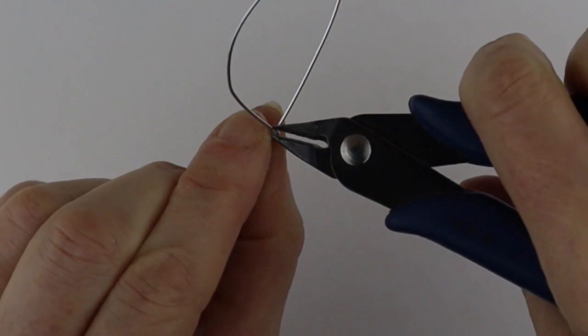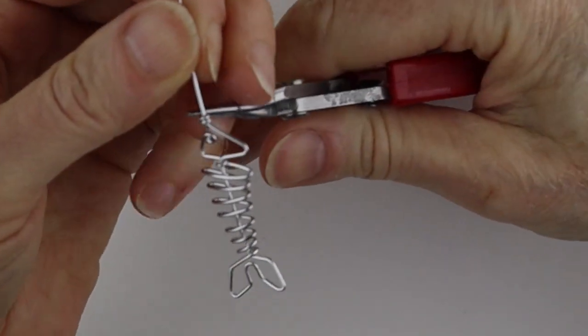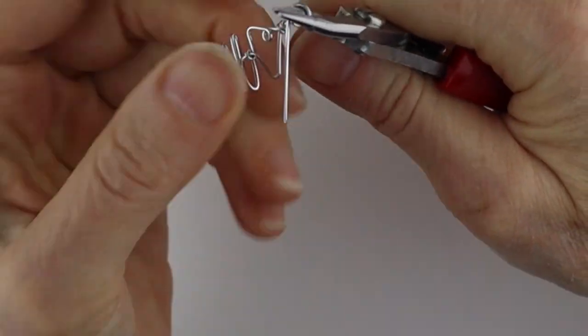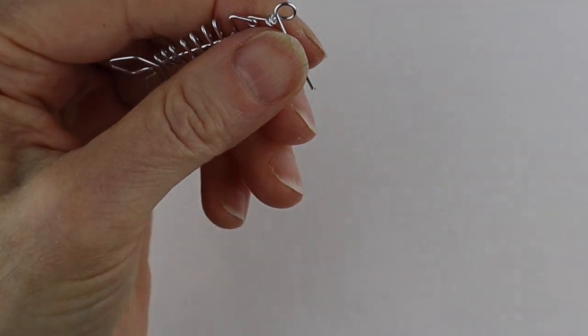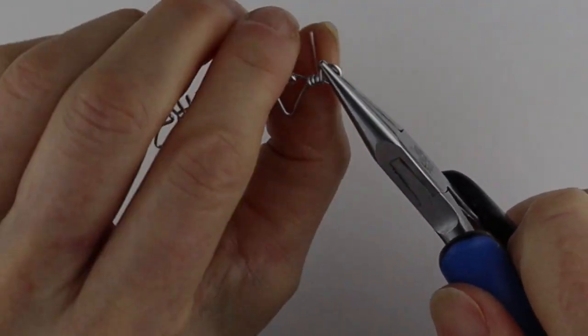And then we want to make a loop at the top. So just bend this to the opposite side, do it around here like that, and then wind it around. Give it a little clip.